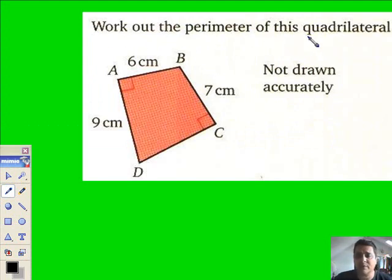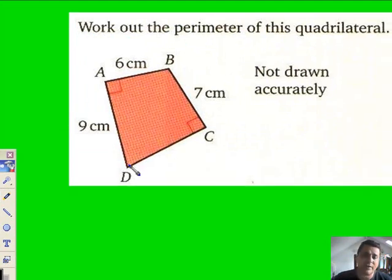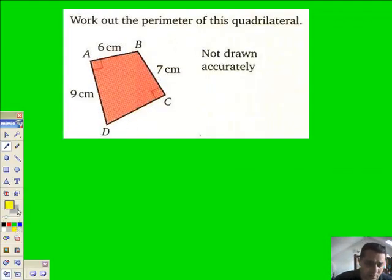Work out the perimeter of this quadrilateral. Oh, I've got it. So 9 plus 6 plus 7 plus, ooh dear, can't do it. I don't know DC or CD even, so I've got to work it out, haven't I? Right, what have I got here? Look very carefully.